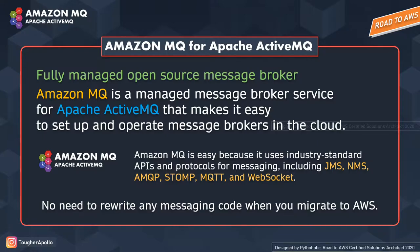Amazon MQ is a fully managed open-source message broker. AWS tells us that Amazon MQ is a managed broker service for Apache ActiveMQ that makes it easy to set up and operate message brokers in the cloud. When we talk about fully managed, there is no need to provision any hardware and you don't need to install and maintain ActiveMQ software. Amazon MQ manages administrative tasks such as software upgrades, security upgrades, and failure detection and recovery. It can also be integrated with Amazon CloudWatch.